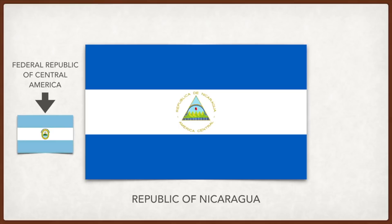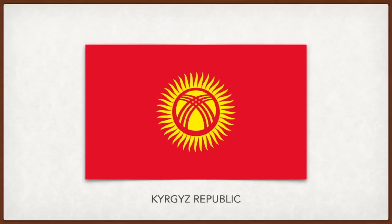Kyrgyzstan: the red background symbolizes bravery and valor and is said to derive from the flag carried by the country's national hero Manas the Noble. The sun represents peace, wealth, light, nobility, and eternity, with 40 rays corresponding to the followers of Manas and the tribes he united. The two crossed sets of three lines are a stylized view of the roof of the traditional yurt, symbolic of the origin of life, unity of time and space, history of the country's people, solidarity, and hearth and home.